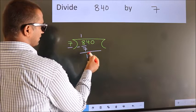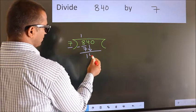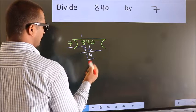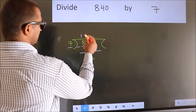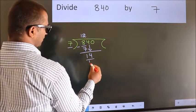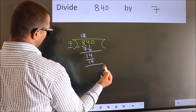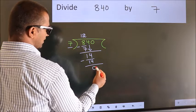After this, bring down the beside number. So 4 down, giving us 14. When do we get 14 in the 7 table? 7 twos is 14. Now we subtract and get 0.